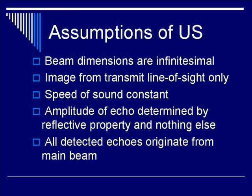Let's go through some of the assumptions of ultrasound scanning. Number one, we assume that beam dimensions are infinitesimal — that is, the x, y, and z directions can be resolved down to very minute dimensions. Two, ultrasound image only comes from the transmit line of sight. Three, speed of sound is constant. Four, the amplitude of the echo is determined solely by the reflective and intrinsic property of the reflector. Finally, that all detected echoes originate from the main beam.